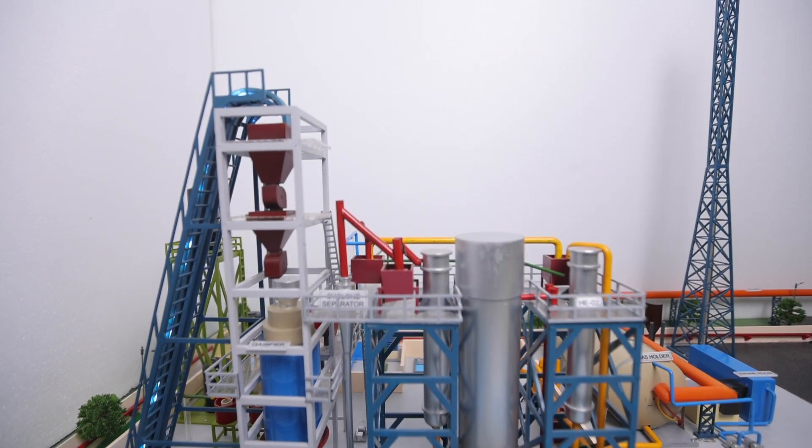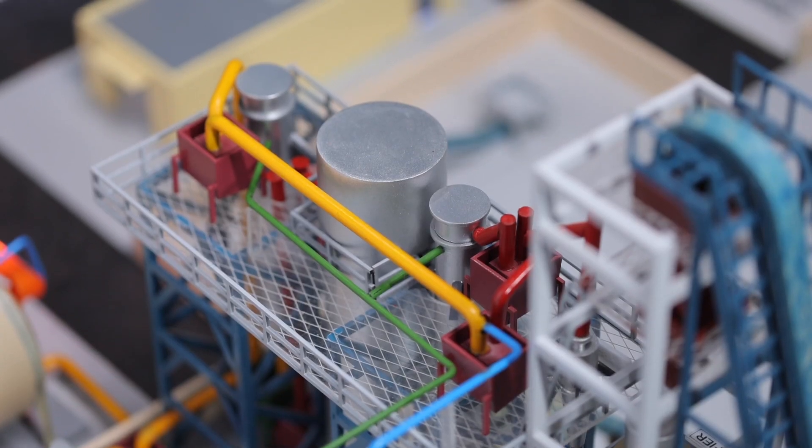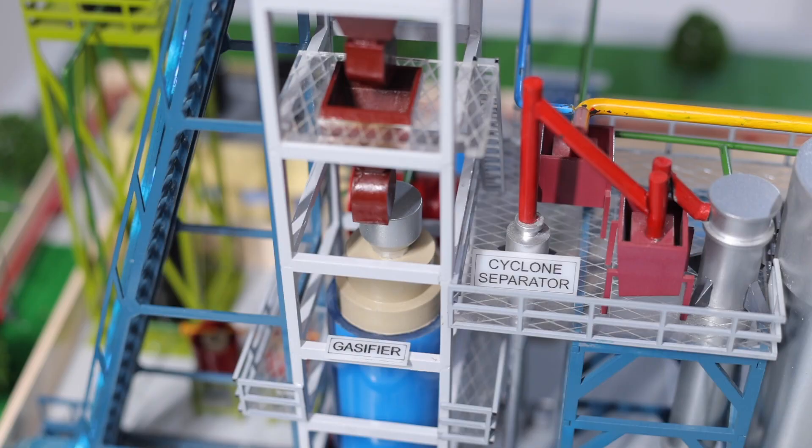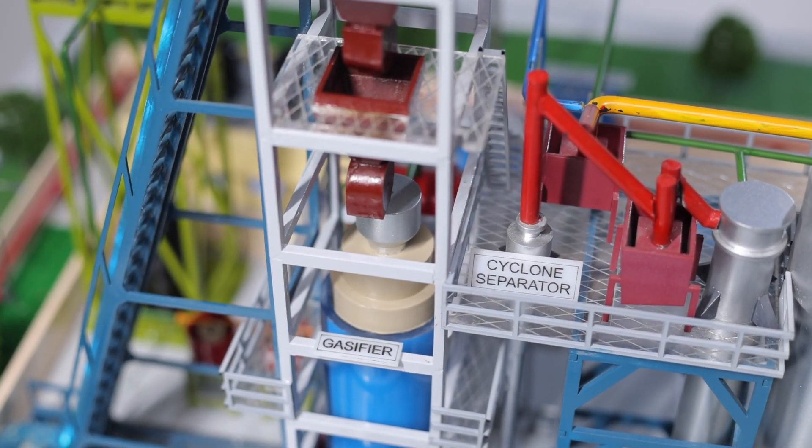In the gasification section, air and steam mixture passes through the fuel bed in the gasifier from the bottom and the producer gas comes out from the top. Four distinct processes occur in a gasifier as the fuel makes its way to gasification: Combustion, Reduction or gasification, Pyrolysis, and Drying.